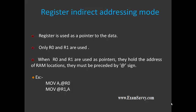Here are some examples: MOV A, @R0 — whatever data is at the address held in R0, that will be stored into the accumulator. The second example: whatever data is in the accumulator, that will be moved to the address location held in R1. That is indicated by MOV @R1, A.